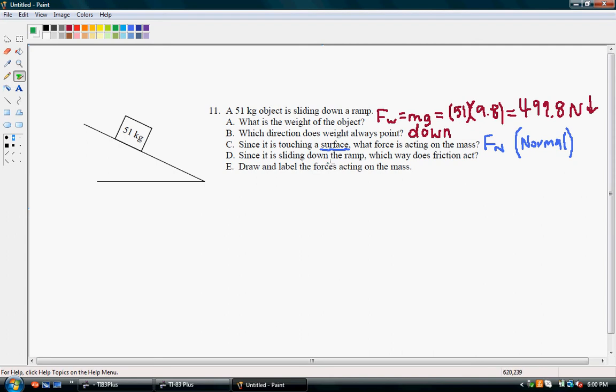Since it is sliding down a ramp, which way does the friction act? It's going to be acting up and to the left. If the box is moving down and to the right, friction is going to be up and left.